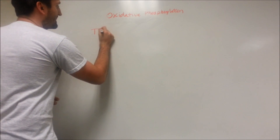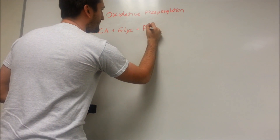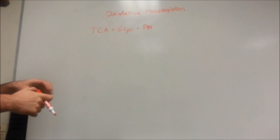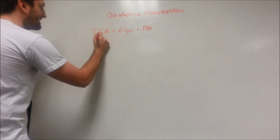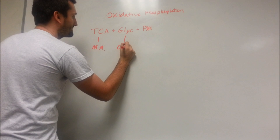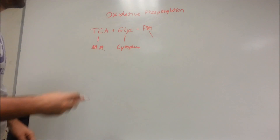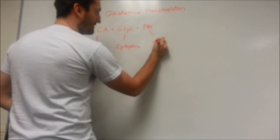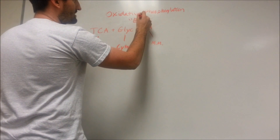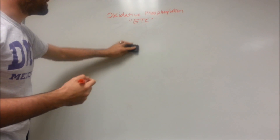The TCA cycle, glycolysis, and pyruvate dehydrogenase reaction all take place in different areas than oxidative phosphorylation. The TCA cycle is in the mitochondrial matrix, glycolysis is in the cytoplasm, and the pyruvate decarboxylation reaction is also in the mitochondrial matrix. Oxidative phosphorylation — the electron transport chain — takes place right on the inside of the inner mitochondrial membrane.